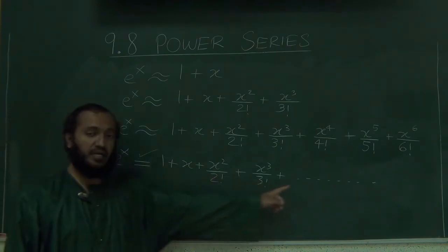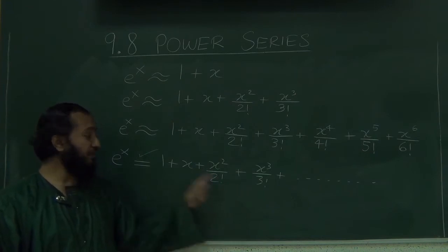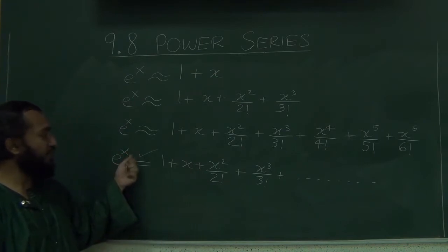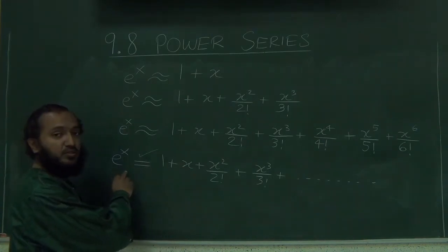That such a series, right, now we are coming back to infinite series. Such a series converges for any possible value of x, and when it converges, the convergence value is e to the corresponding x. In other words, if I replace the x with 3, it will converge to the exact value of e to the 3. If I replace the x with 7, it will converge to e to the 7.